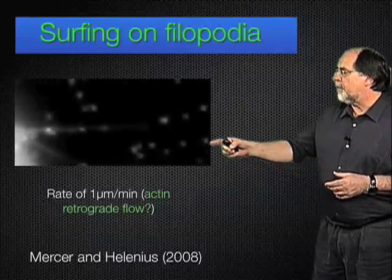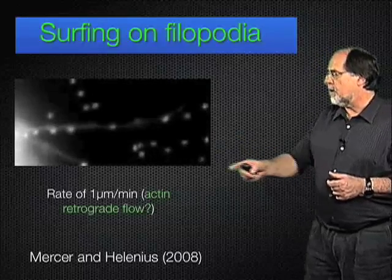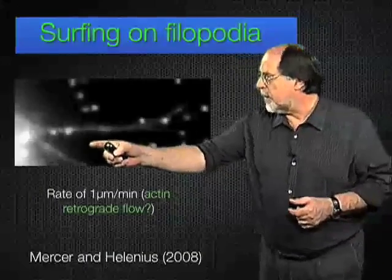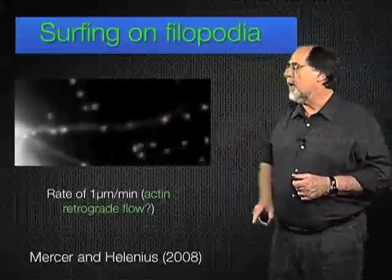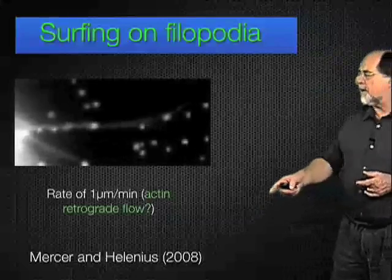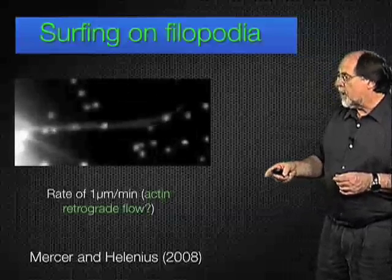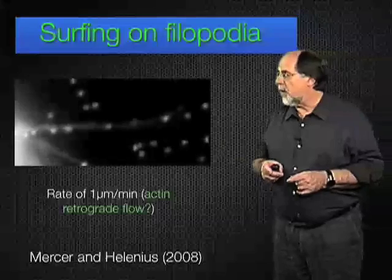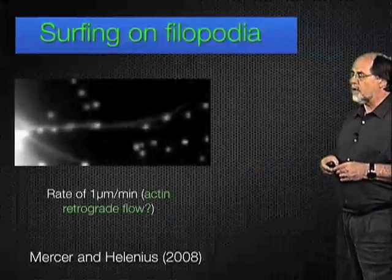So the first thing he saw was that this virus also surfs on filopodia. The host cell is out here and you can see the virus moving along filopodia, and for all we know this is also happening through actin retrograde flow, like the papillomavirus. This phenomenon was first seen by Walter Mottes and co-workers for other viruses.